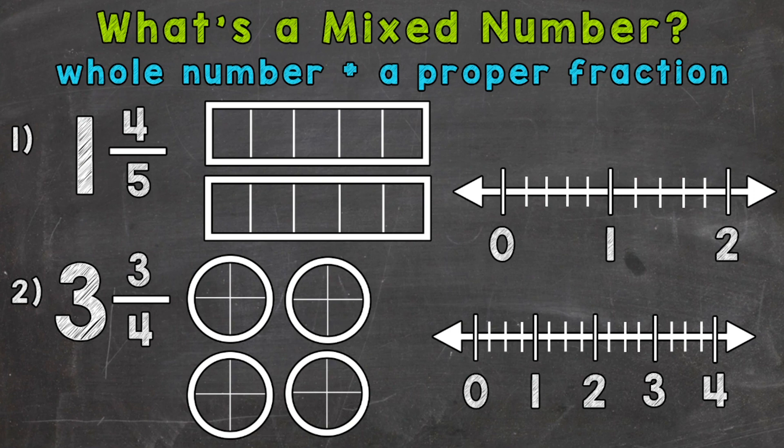Let's jump right into number one. Like I mentioned, we have a whole number and a proper fraction, so we have one and four fifths. This particular mixed number represents a value in between one whole and two wholes. Let's model this mixed number and then also place it on a number line in order to help us visualize and really understand what mixed numbers are.